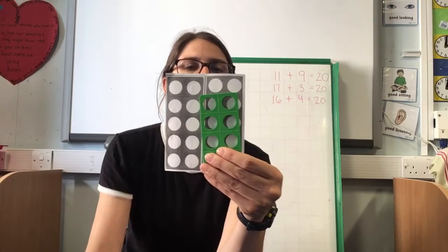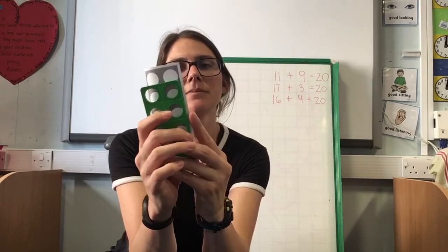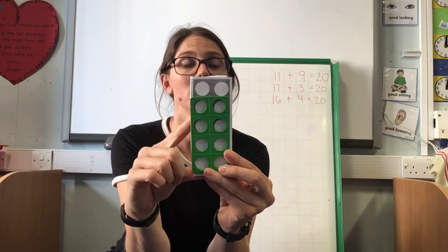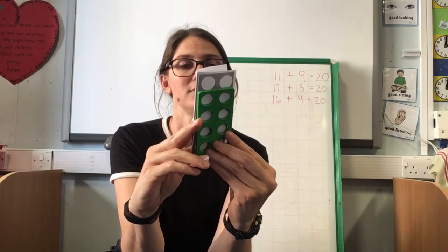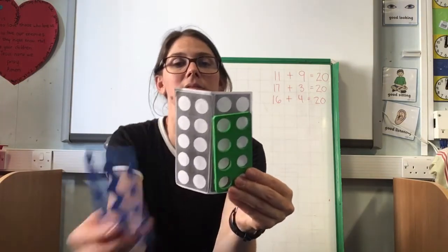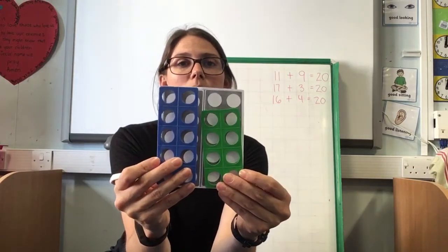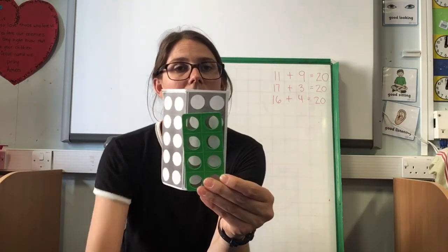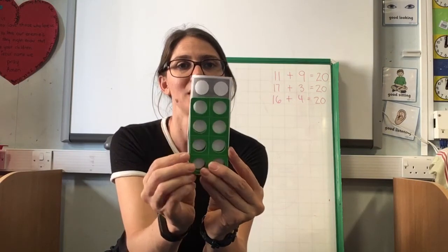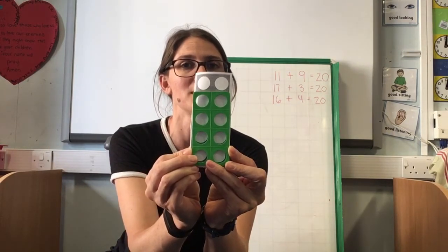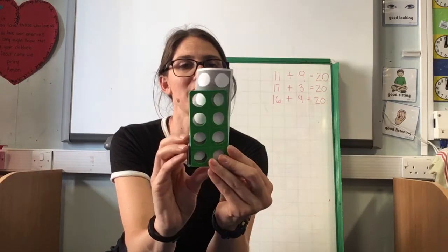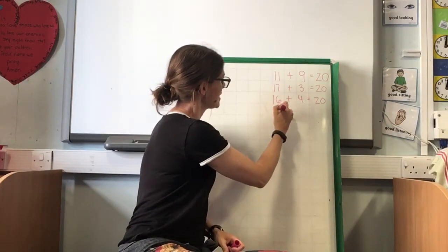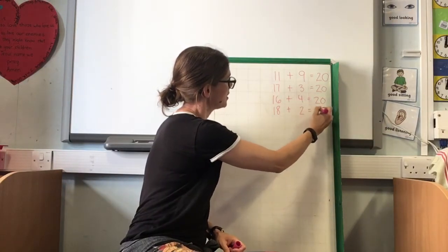So let me show you. If I took this 10 away and I took this 10 away — 8 and 2 equals 10. 18 and 2 equals 20. Can you spot that pattern? 18 plus 2, or just 8 plus 2. The 8 and the 2 make the bond to make 10, and it can help us. So let's write that one down: 18 add 2 equals 20.